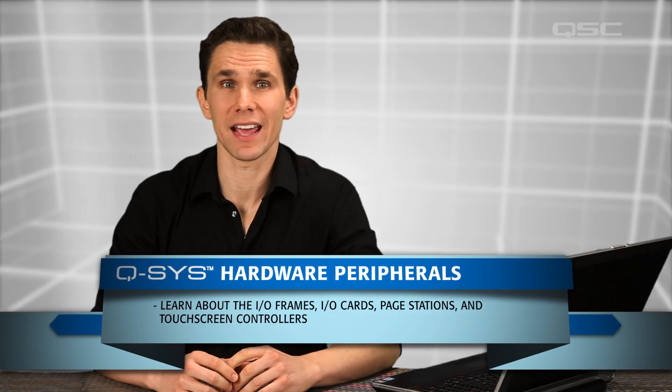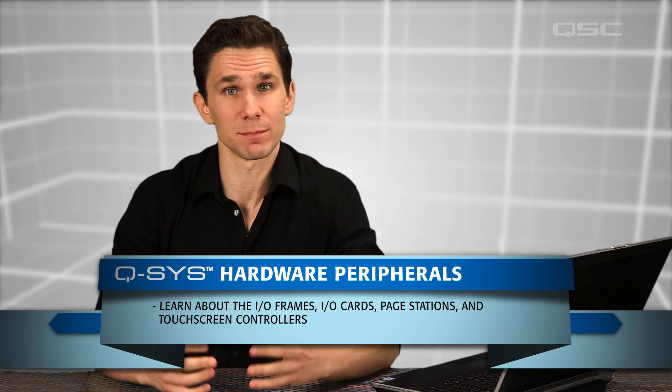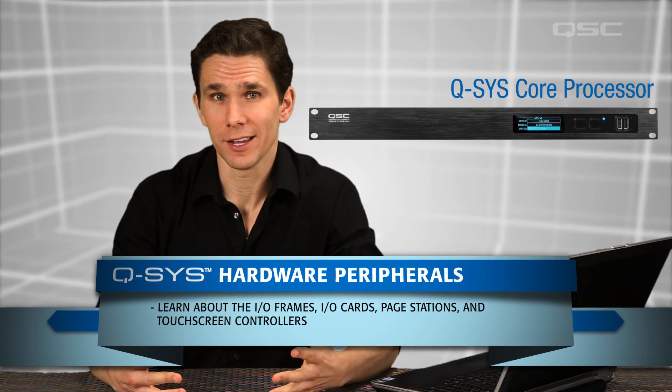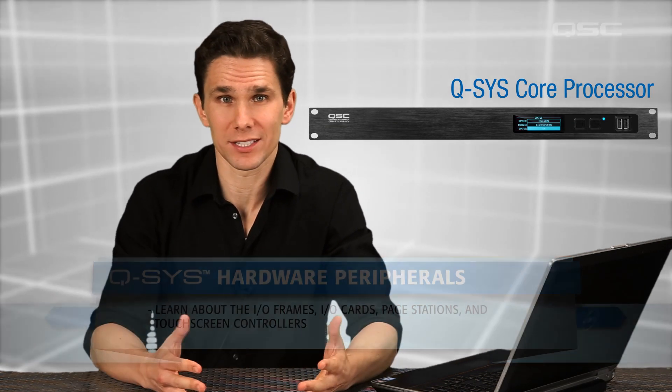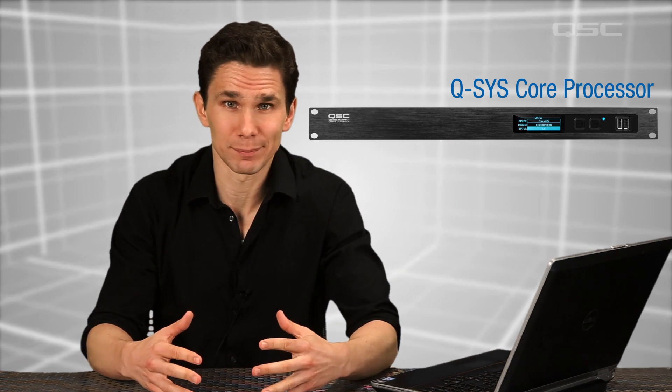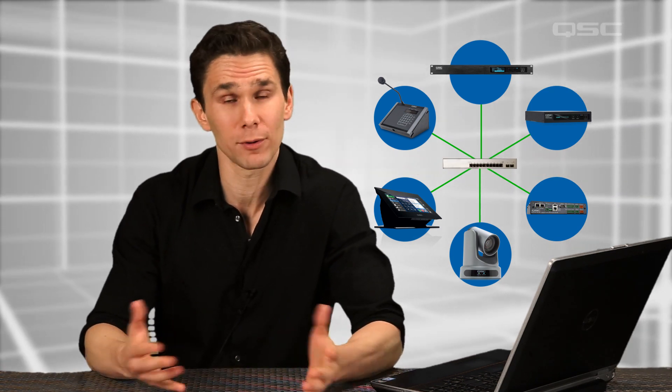By now you should understand that every system starts with a Q-SYS Core. It handles all the audio, video, and control processing on your system. But now we're going to introduce you to all the different specialized network peripherals you can add depending on your application needs. All of these peripherals send their data over the same standard gigabit network back and forth to the core for processing.